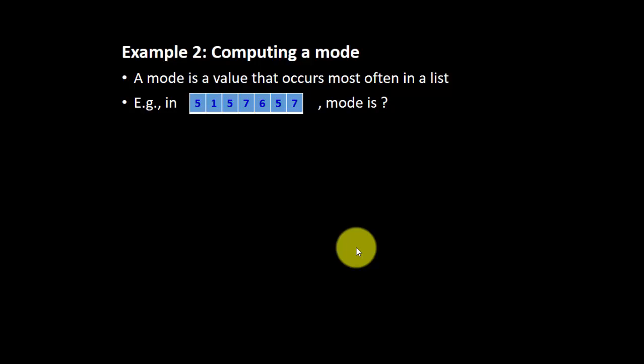So, given an example, there's seven elements, 5, 1, 5, 7, 6, 5, 7. What is the mode? As a human, we can count the mode is 5, because it appears three times.